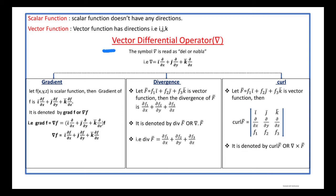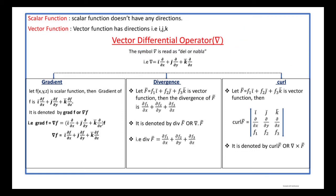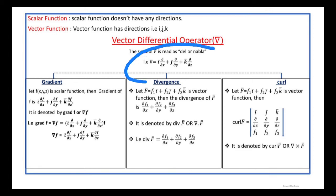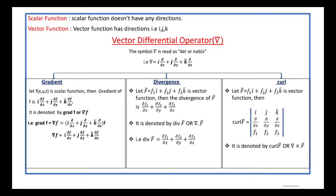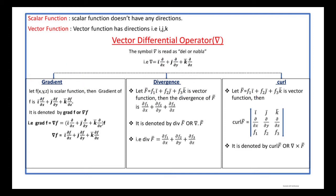First of all, the vector differential operator — this is the symbol of the vector differential operator, read as 'del' or 'nabla'. It is defined by: del equals i-bar (∂/∂x) plus j-bar (∂/∂y) plus k-bar (∂/∂z). The del operator is used in gradient, divergence, and curl.